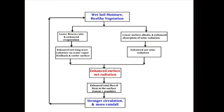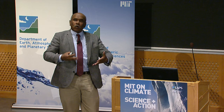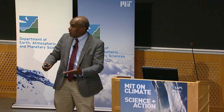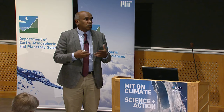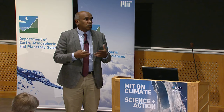What you get from this framework is a positive feedback: wet soil moisture conditions and denser vegetation lead to conditions that enhance rainfall, which leads to more wet conditions and more vegetation. The albedo side is consistent with Charney's theory from the 1970s, where albedo feedback at the desert borders in Africa tends to reduce energy at the surface and enhance subsidence at those borders.